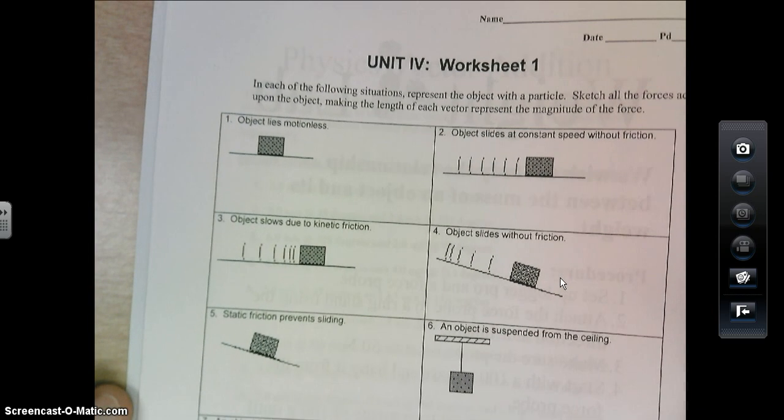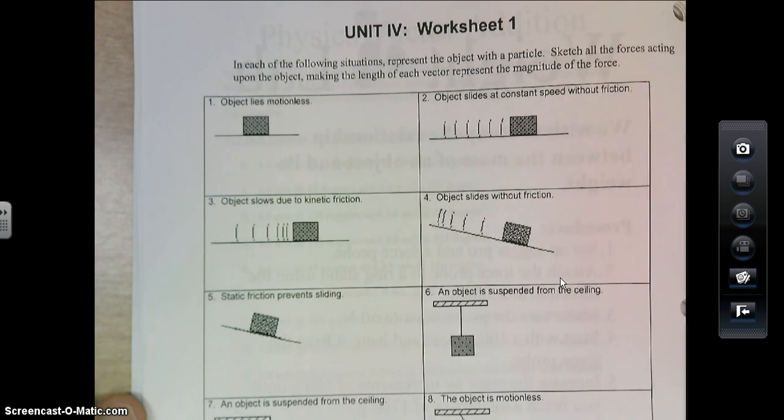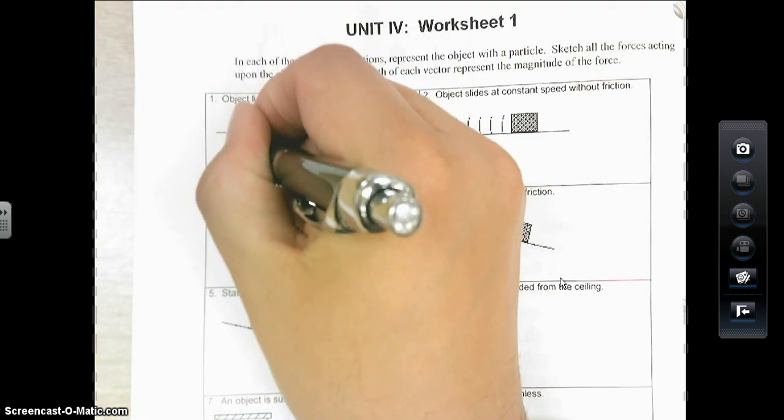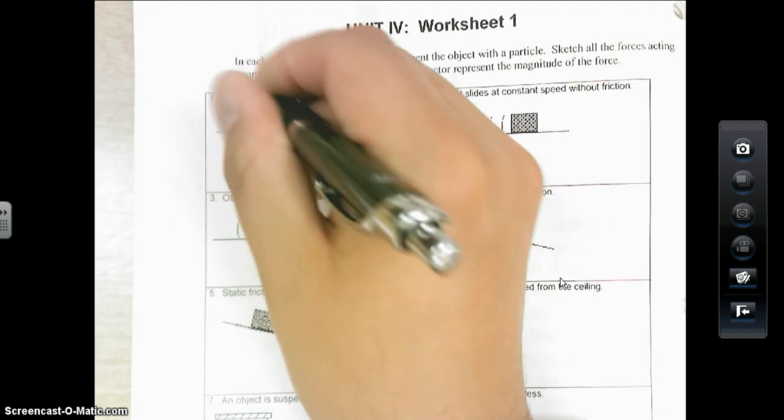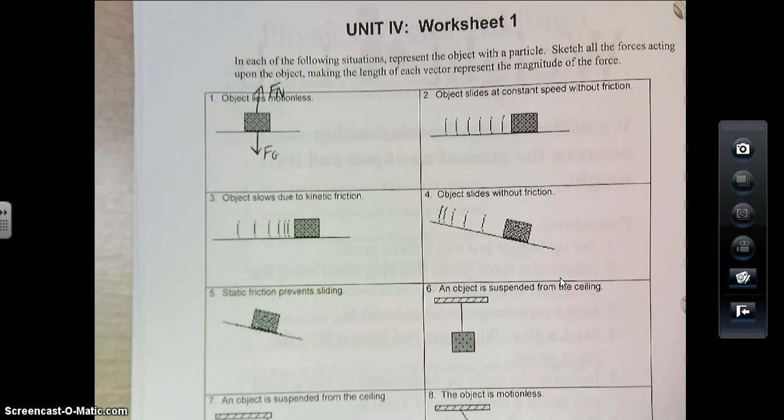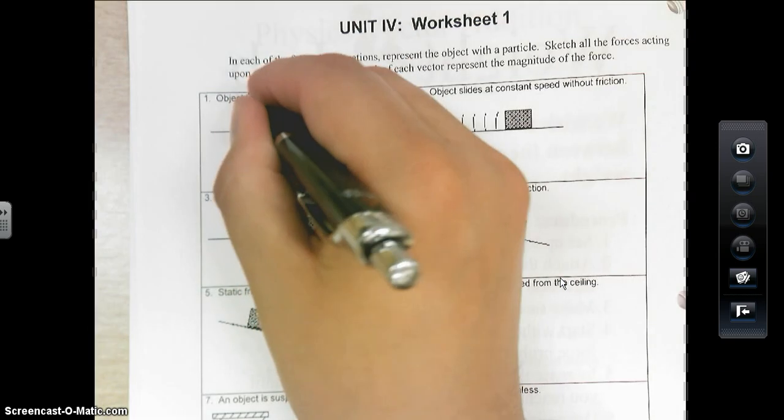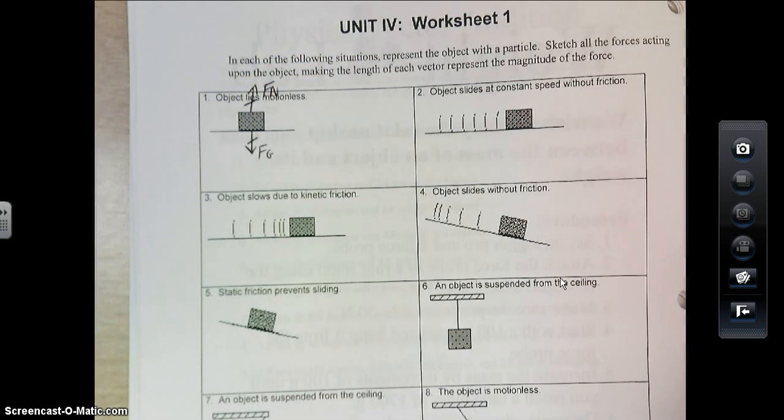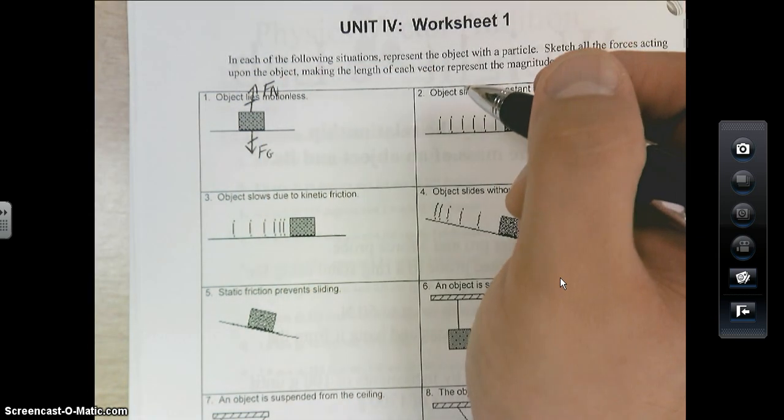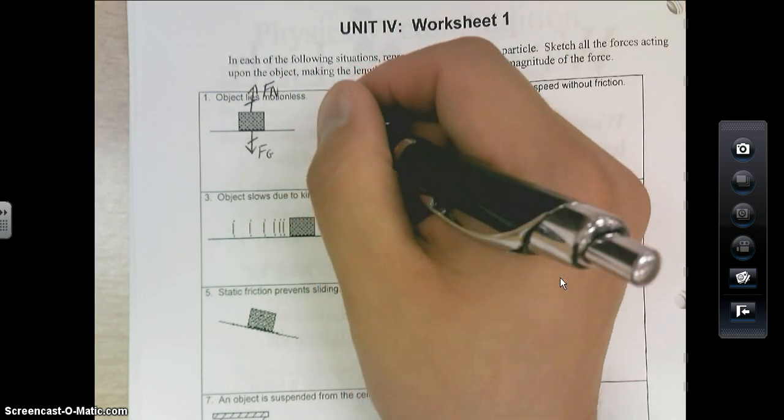This is from my general physics class. And we just did this one, right? If the object's laying motionless, then we've got an F of G and an F of N. In this case, I might want to start talking about the fact that those two things are equal to each other. And I could write what's called a sum equation,